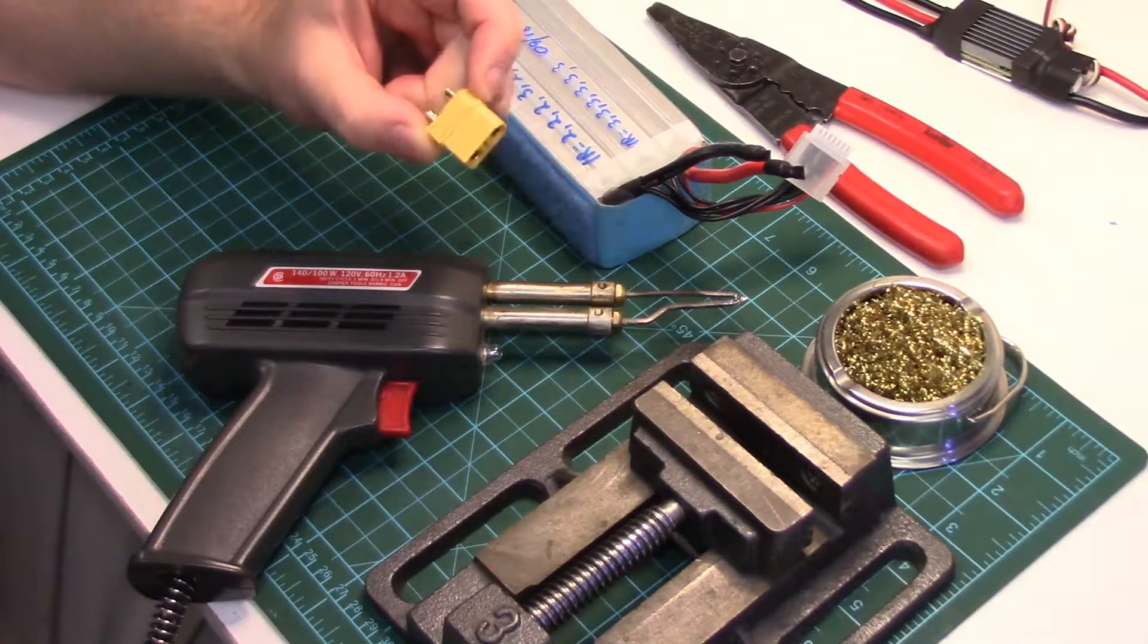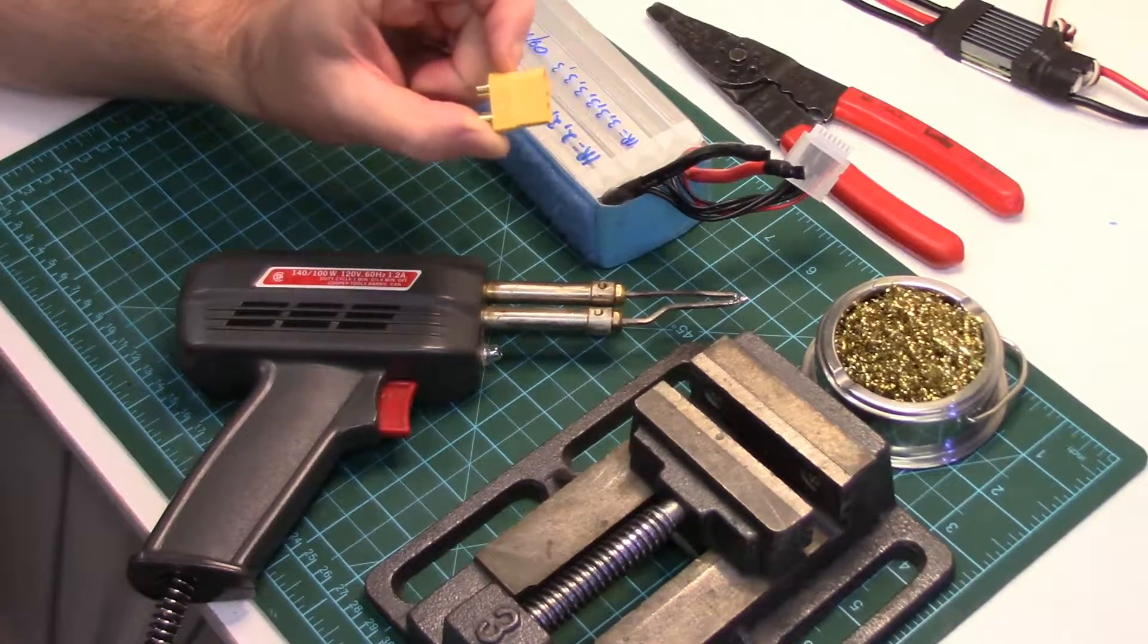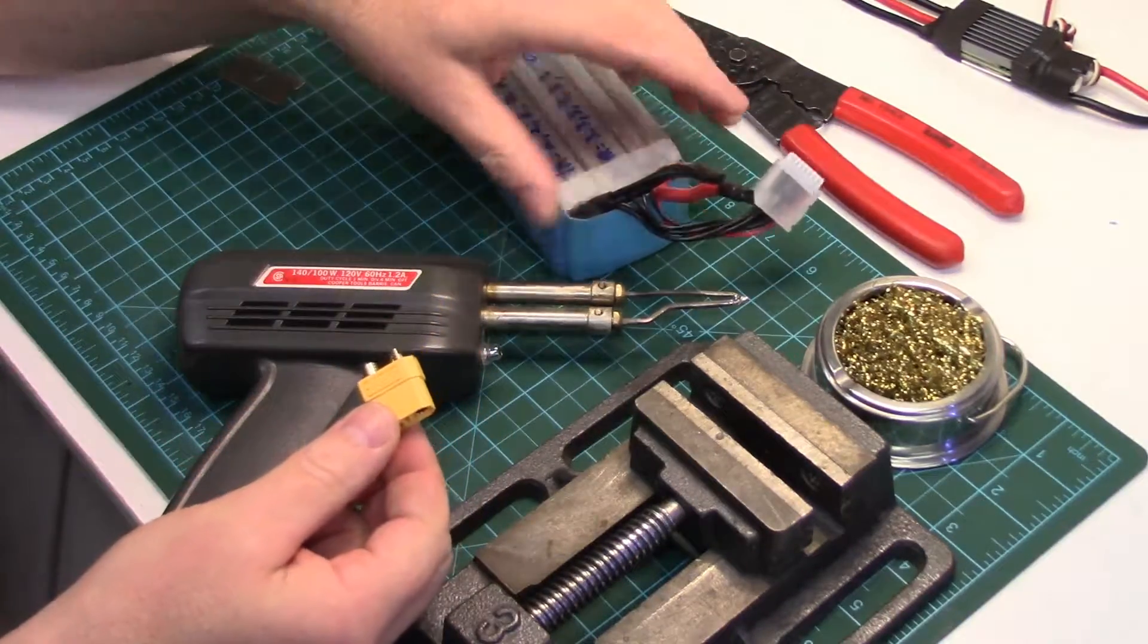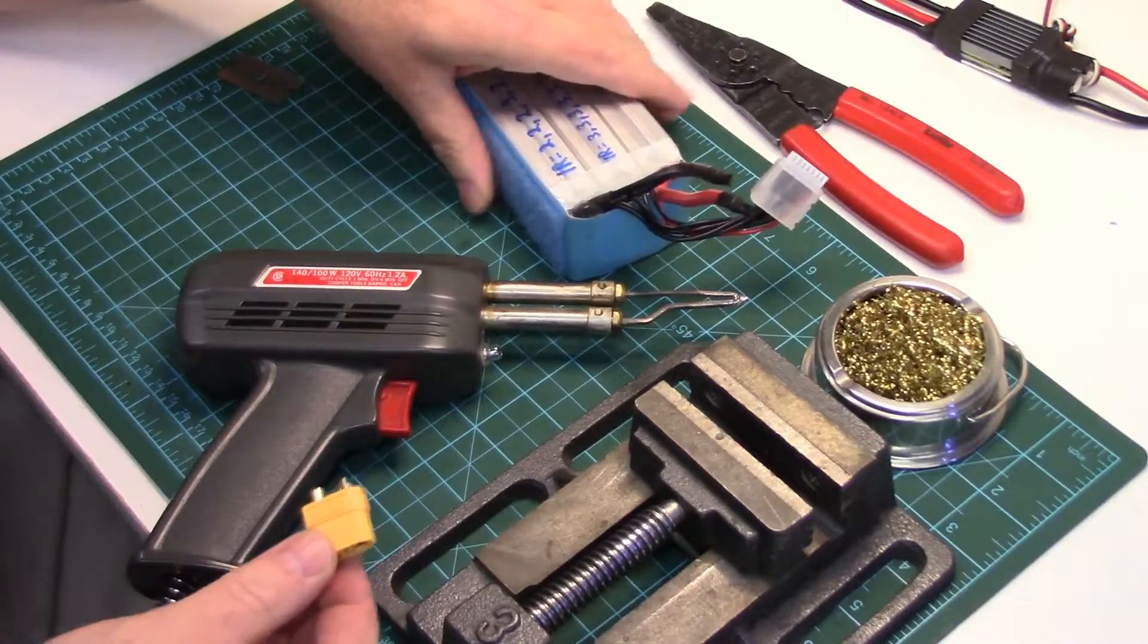Welcome back, now we're going to be soldering an XT-90. This is a female XT-90 plug that I'm going to be soldering onto this battery pack.